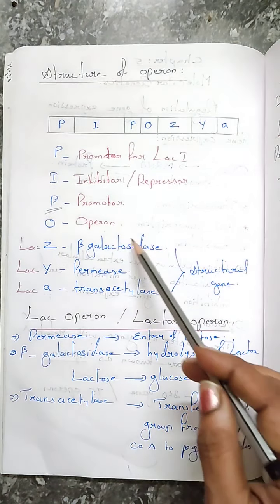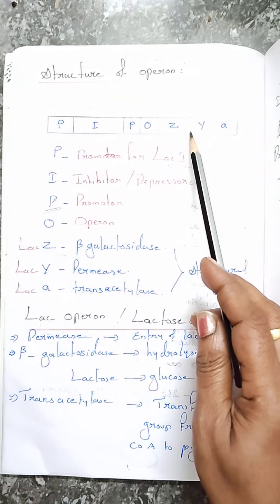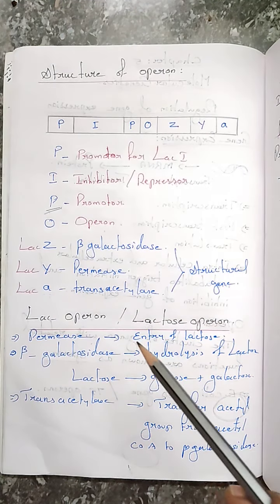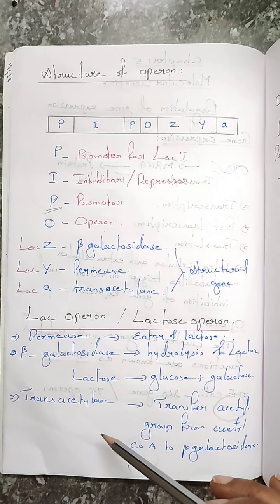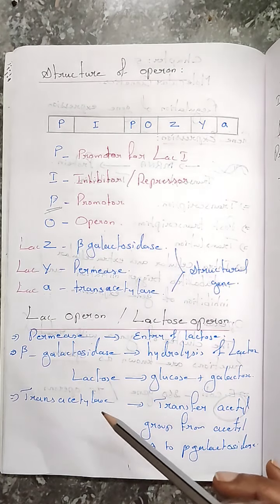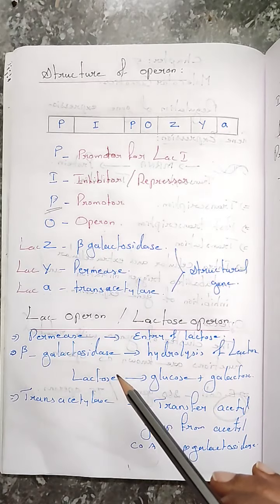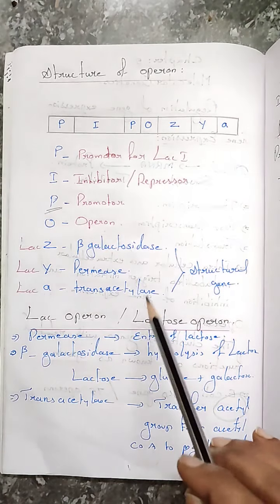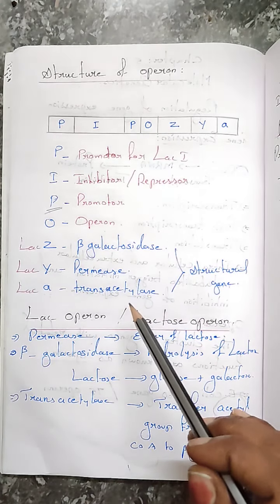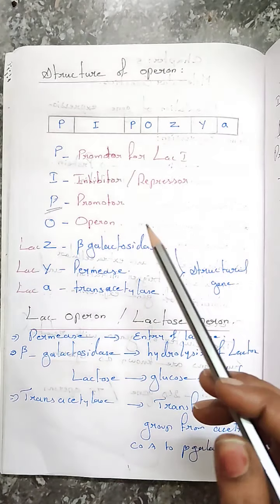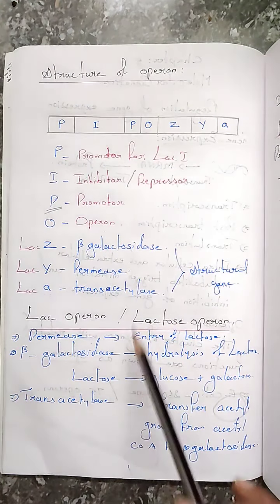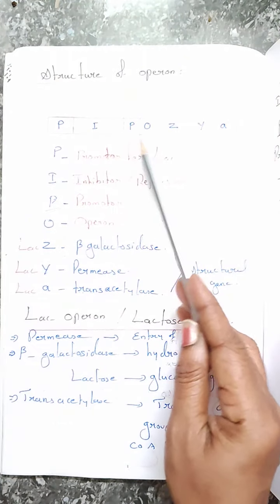Overall, these three enzymes are required for the metabolic process of lactose in bacteria. These enzymes are produced by the structural genes. Now, how will this be regulated? That is the process of regulation of gene expression. How the synthesis of these enzymes and lac mRNA will be controlled — that is regulated by the operon and operator.